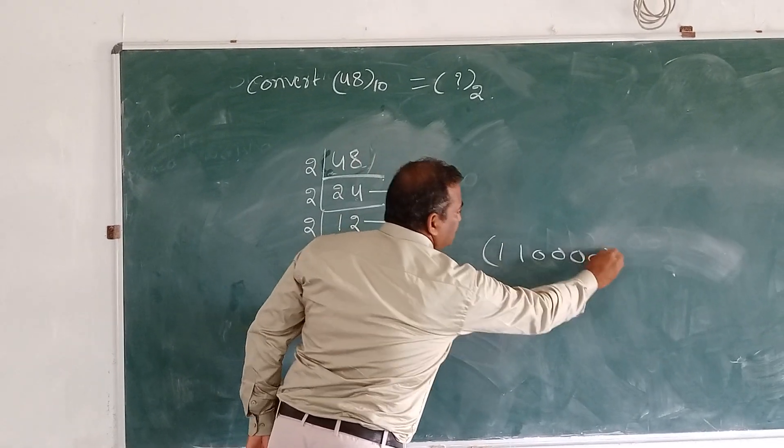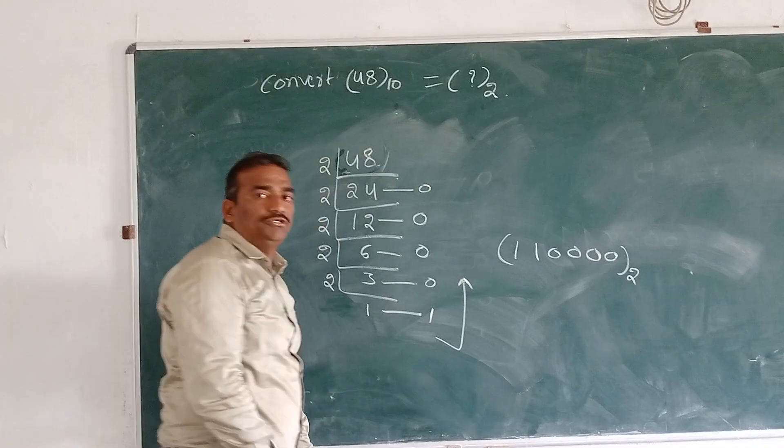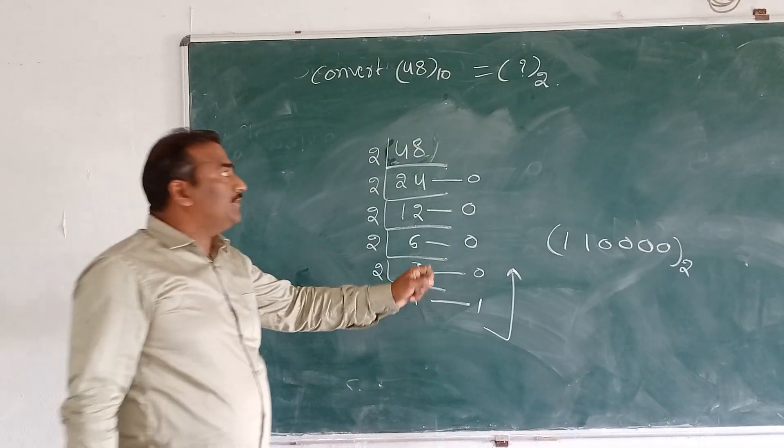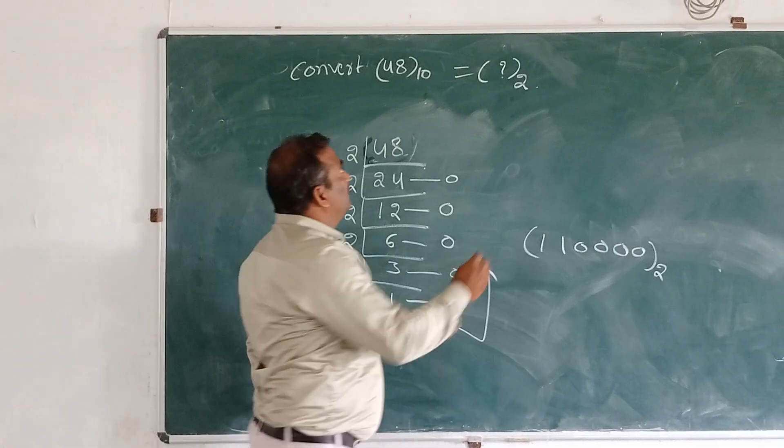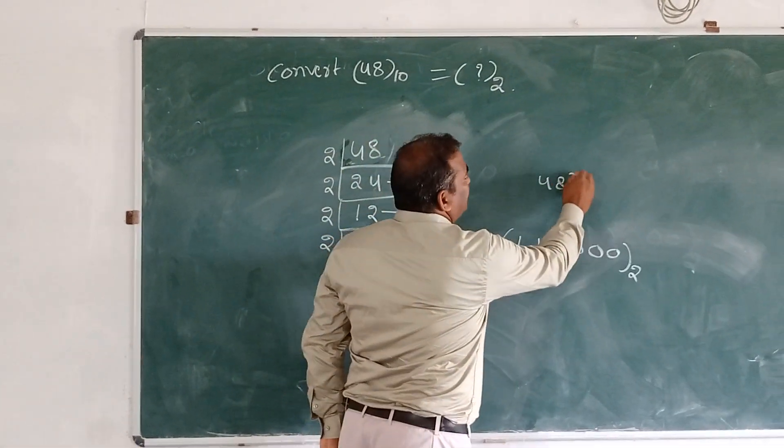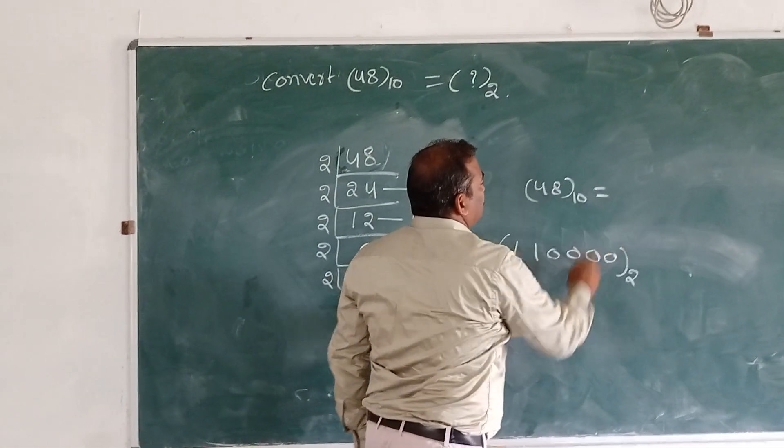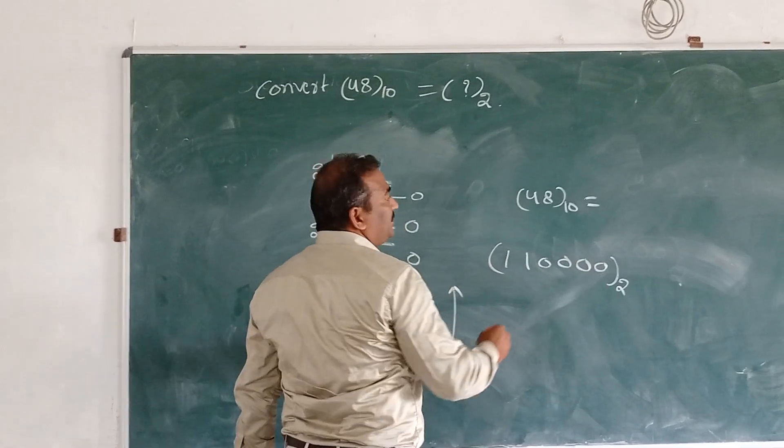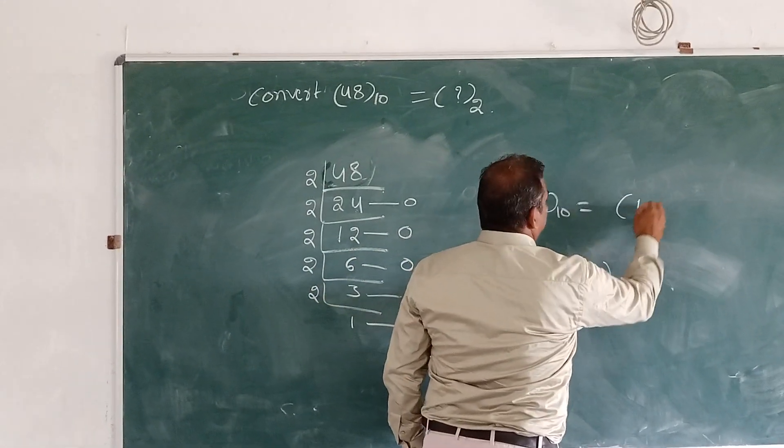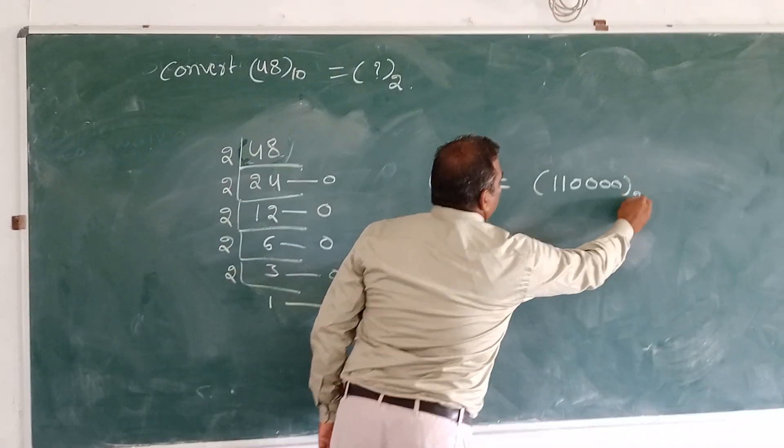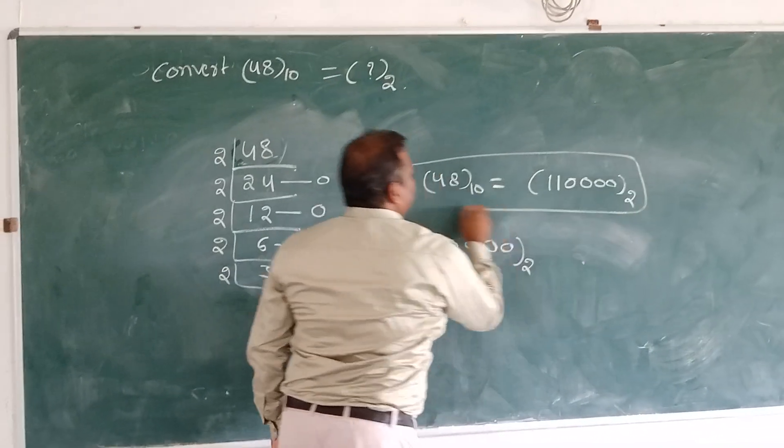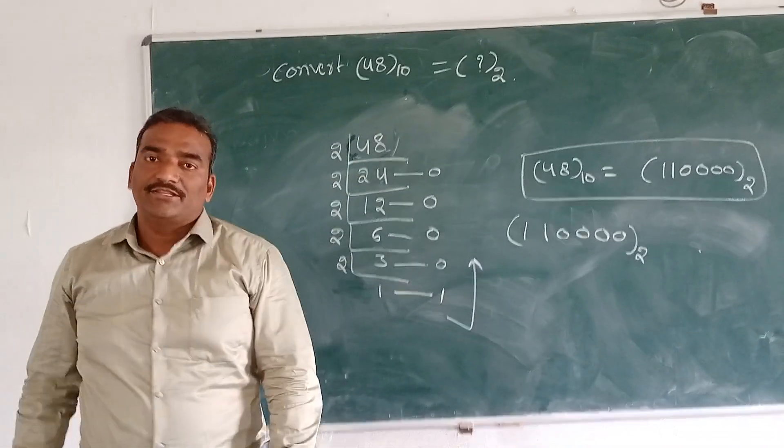This value is the binary equivalent of decimal 48. So decimal value 48 is equal to binary 110000. This is the answer. Thank you.